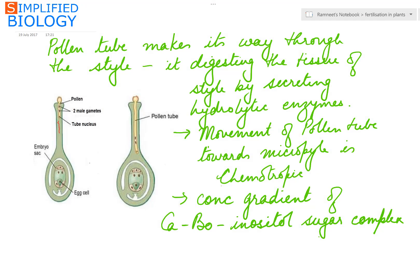The pollen tube moves downward through the style by secreting hydrolytic enzymes that digest the tissue of the style, and hence starts moving downwards towards the ovule.